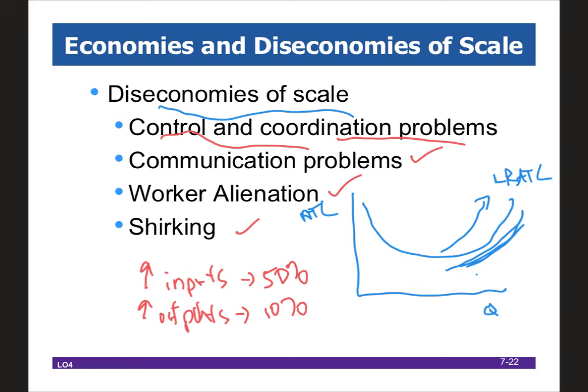Think of economies of scale as incredibly efficient productivity — the use of robots to enhance productive capacity is economies of scale. Some firms acquire robotic technology because it enables greater efficiency and a decrease in long-run ATC. In the case of diseconomies of scale, the firm makes decisions that lead to an increasing long-run ATC, a lack of productivity — paying workers a full salary for not doing their job creates expensive issues where your bang for your buck is not there.